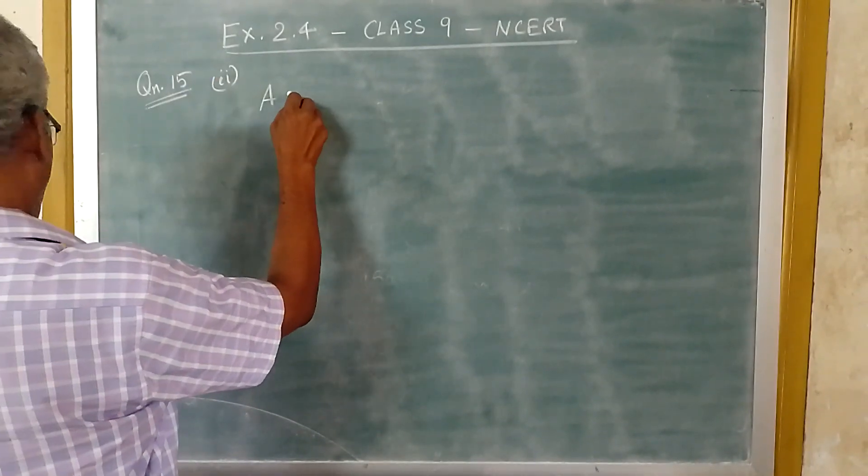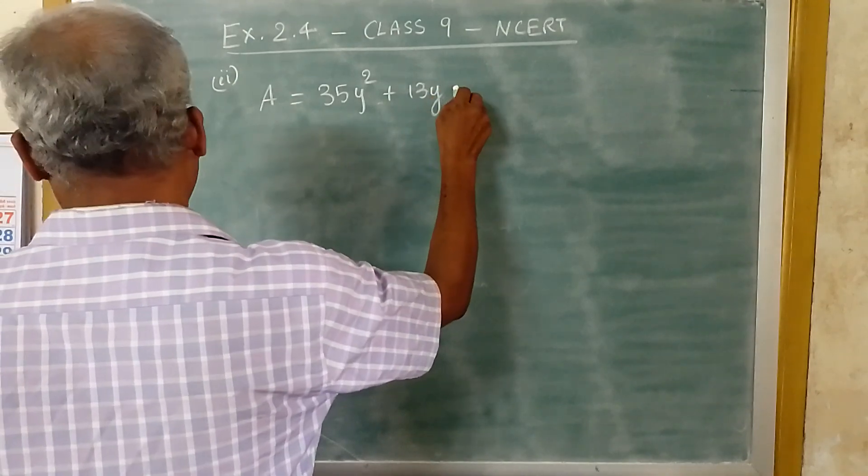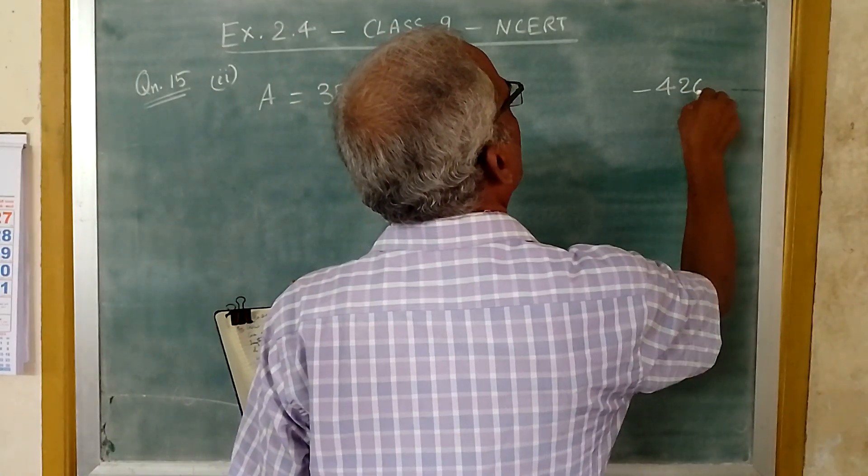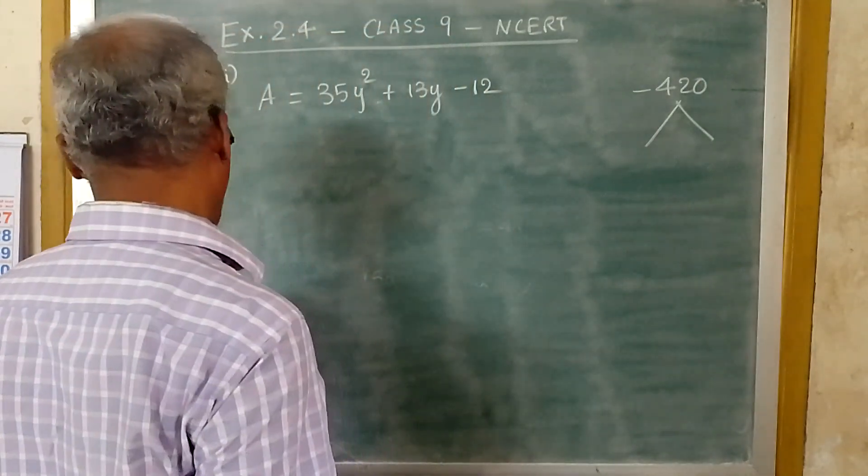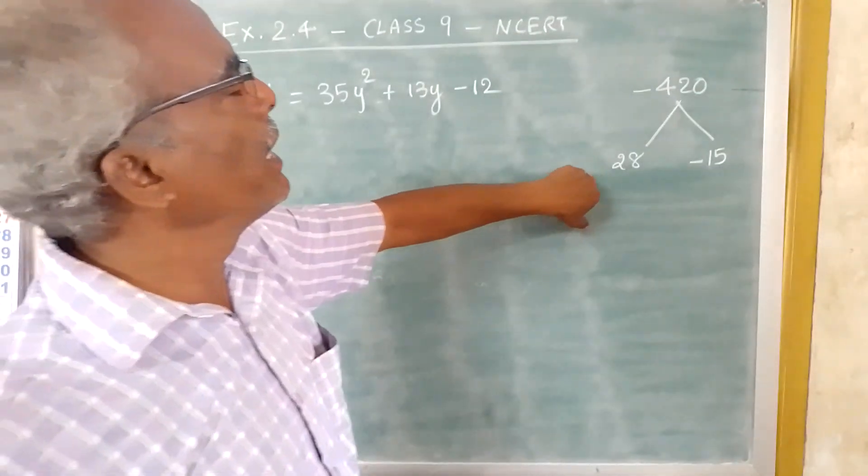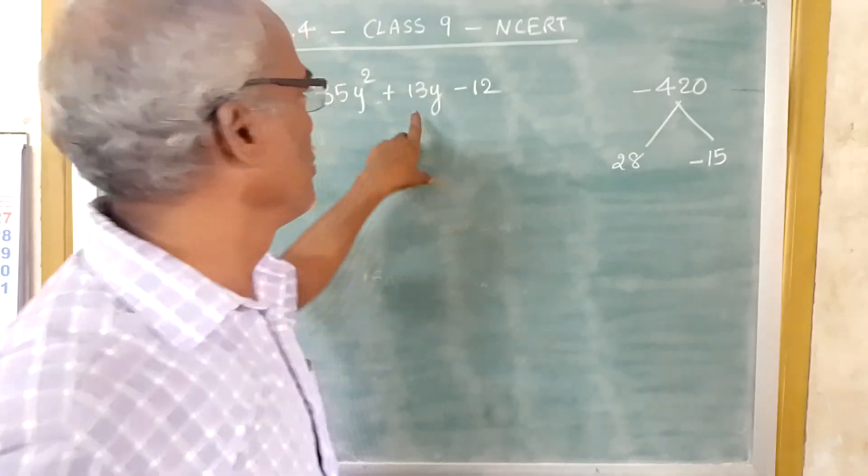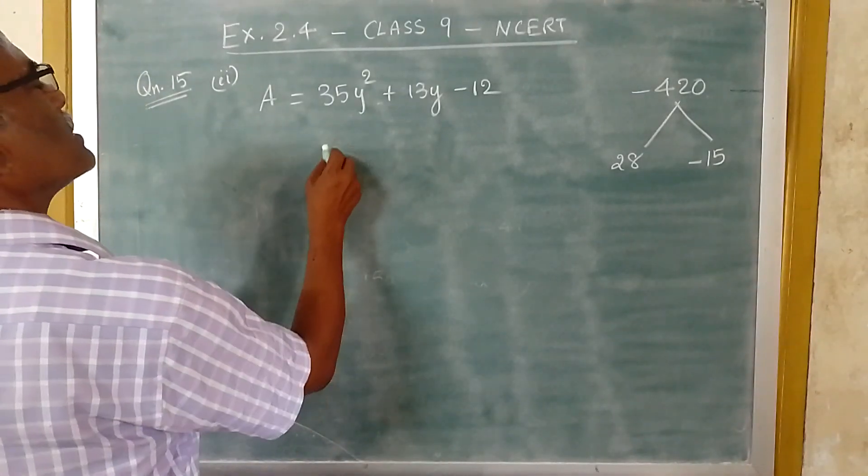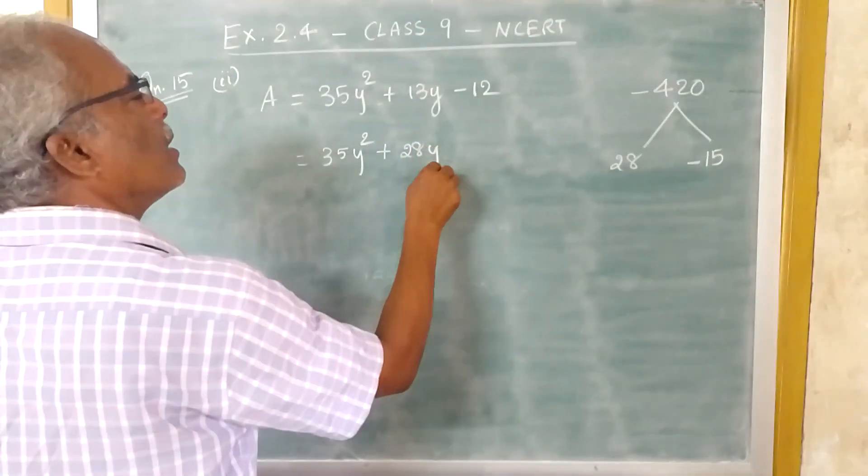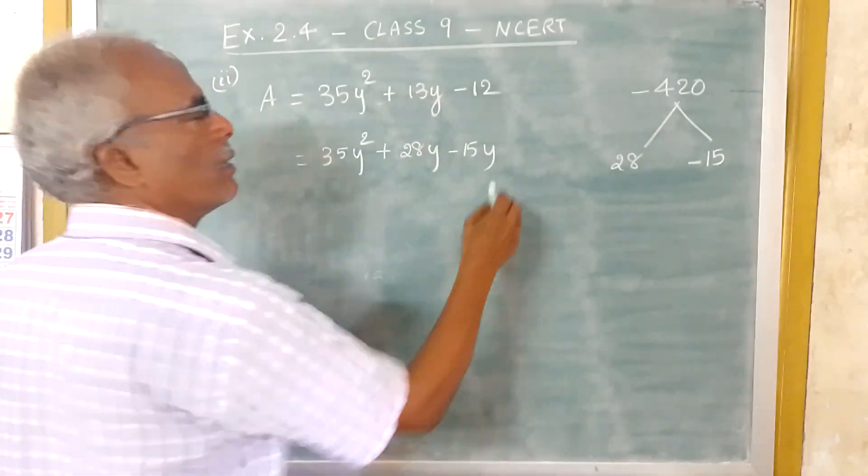Area is given, area is equal to 35Y square plus 13Y minus 12. So if you multiply 35 and 12, you will be getting minus 420. Now this can be split into 28 into minus 15. If you multiply 28 and minus 15, you will be getting this 13. So this can be written as 35Y square. This plus 13Y can be split into 28Y minus 15Y. If you add these two, you will be getting 13Y minus 12.